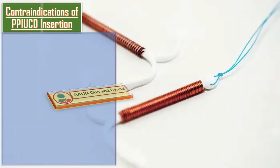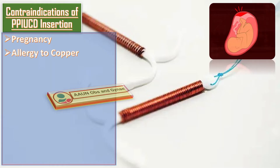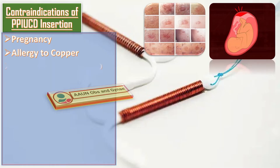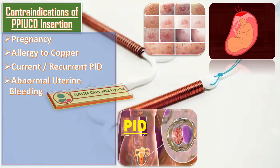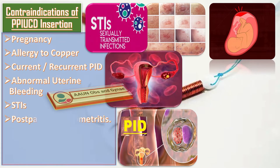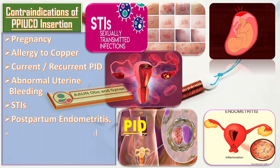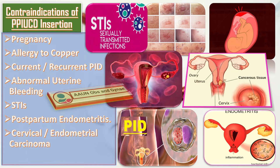Contraindications of PP-IUCD insertion include pregnancy, allergy to copper, current or recurrent PID, abnormal uterine bleeding, sexually transmitted infections, postpartum endometritis, cervical or endometrial carcinoma, and molar pregnancy.